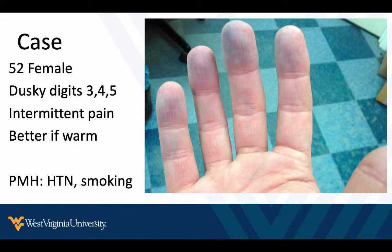Her pain is intermittent, seems better when warm, and we're thinking vascular — not only because this is a vascular ultrasound lecture, but she's got hypertension and smoking history that we see in about 95% of our patients. So this is probably just Buerger's disease. Why don't we tell her to stop smoking and go home?